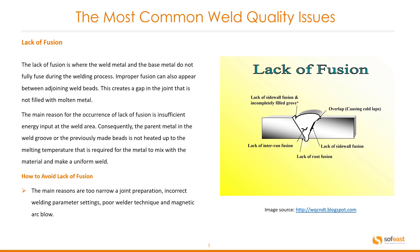Lack of fusion is where the weld metal and the base metal do not fully fuse during the welding process. Improper fusion can also appear between adjoining weld beads, creating a gap in the joint that is not filled with molten metal. The main reason for lack of fusion is insufficient energy input at the weld area, meaning the parent metal in the weld groove or previous beads are not heated up to the melting temperature required for the metal to mix and make a uniform weld.